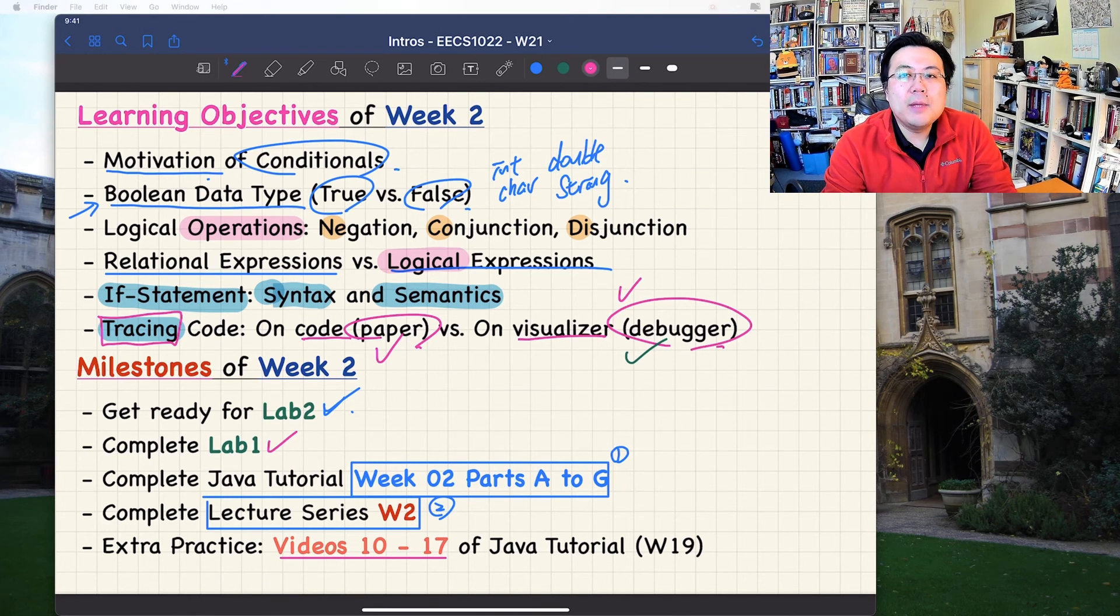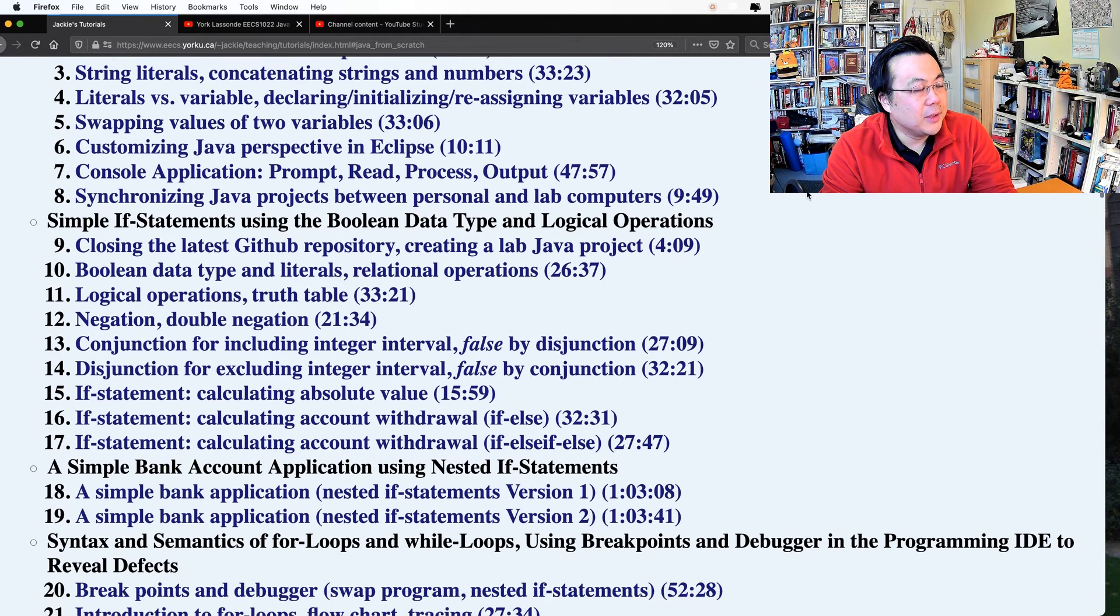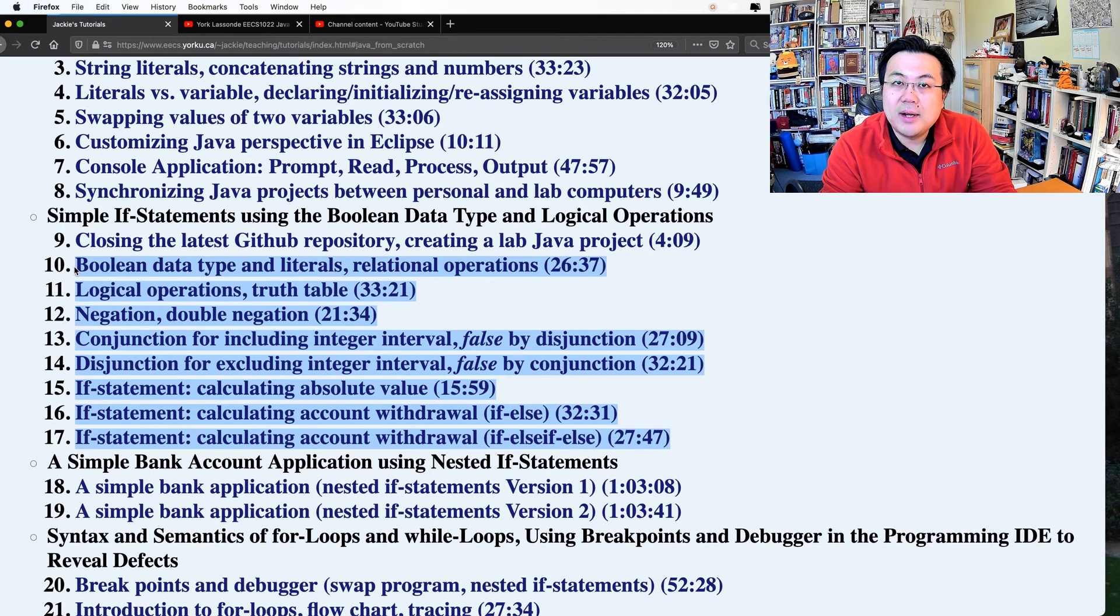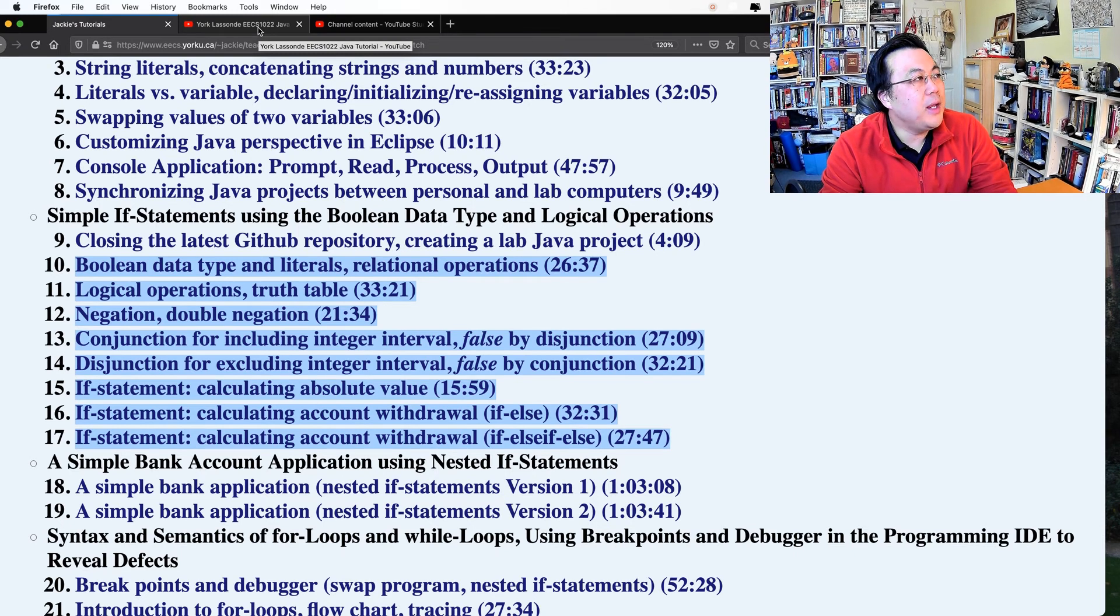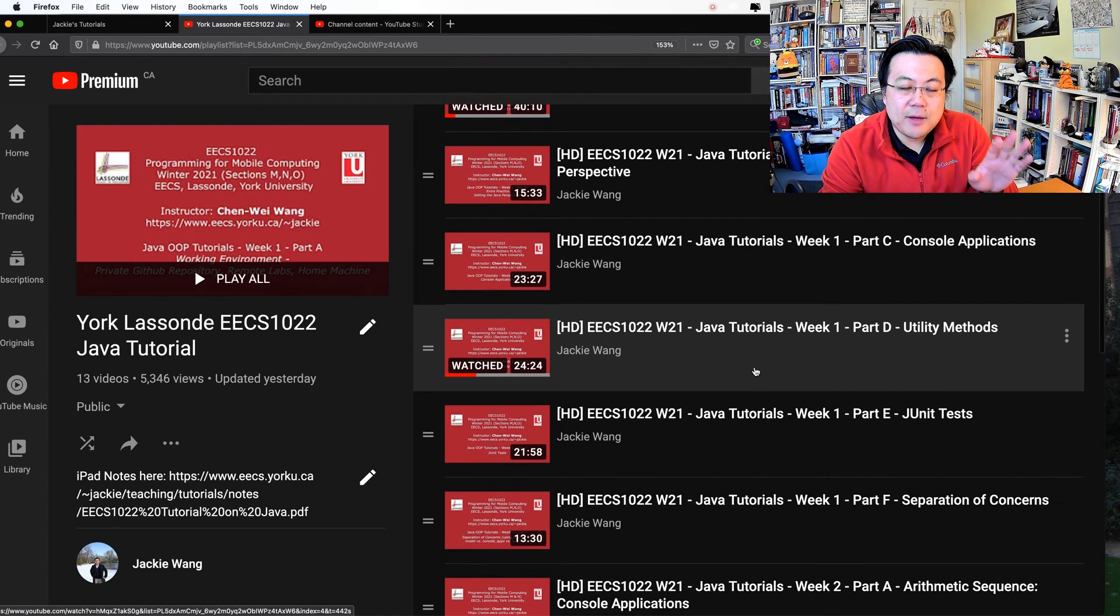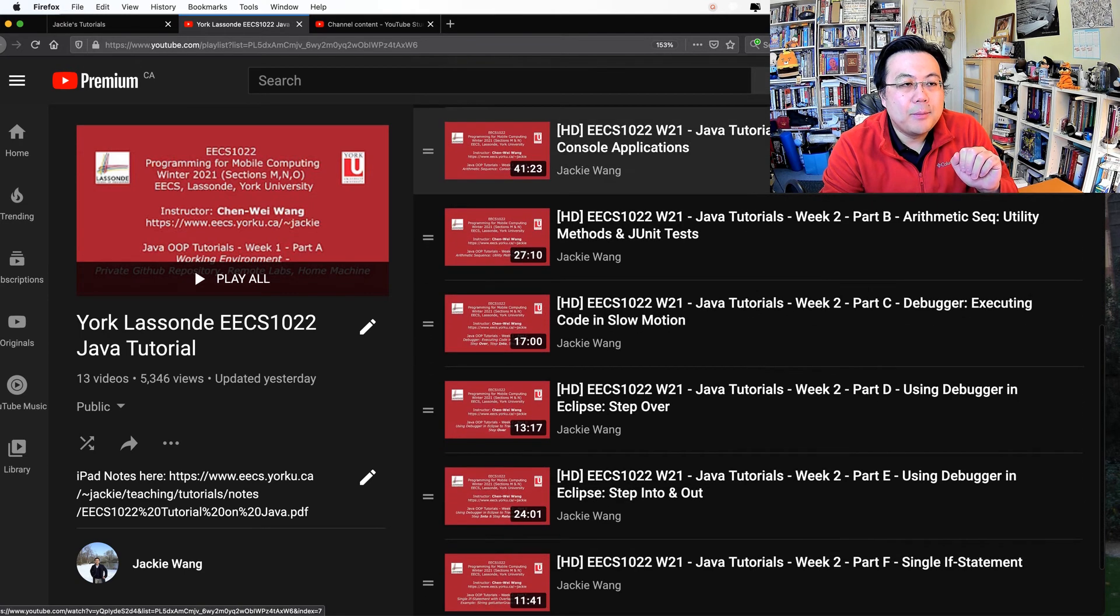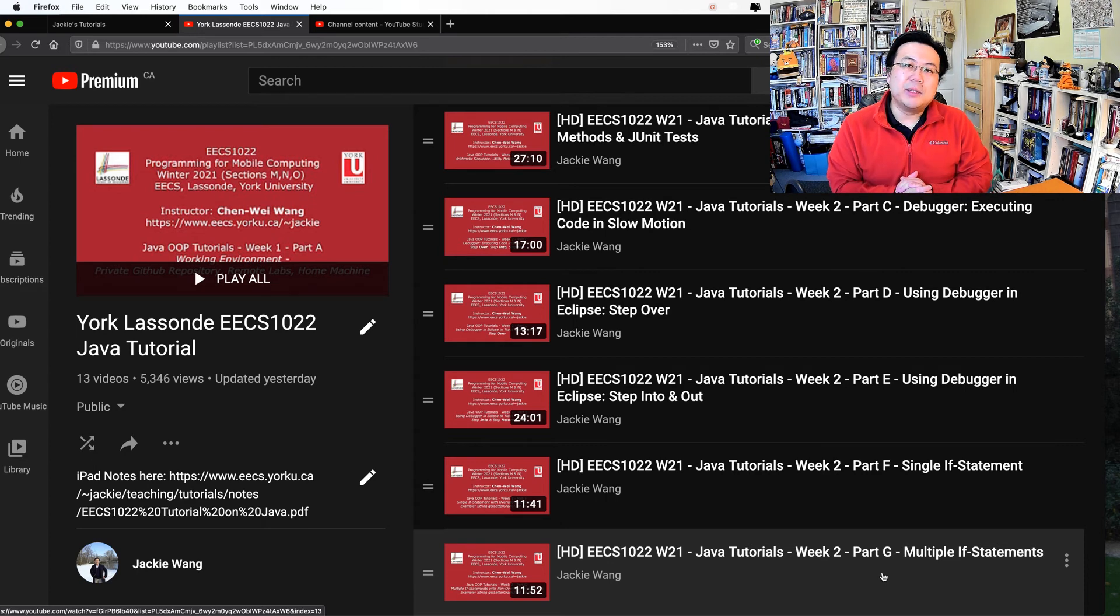Let me bring to your attention this tutorial, the Java tutorial created for winter 19. For this week, I recommend you do from video 10 to video 17 as extra practice. What's required for you to complete will be your weekly tutorial video in the same playlist. This is week number one, you should have done that already. I want to scroll down to week number two. You can see part A all the way to part G. Next week, we're going to release week number three. We want to give you bits by bits every week so you can get more hands-on experience for Java.